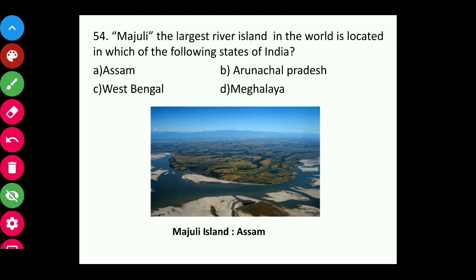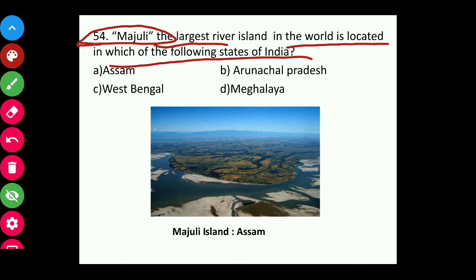Question fifty-four (repeated from 2016): Majuli, the largest river island in the world, is located in which state of India? The answer is Assam.